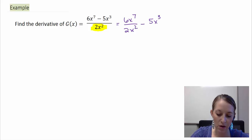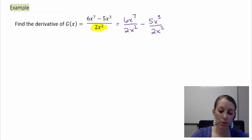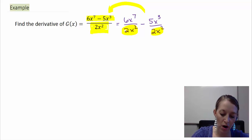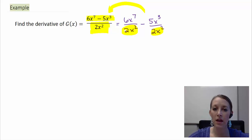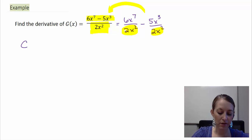So I have 6x to the seventh over 2x squared, minus 5x to the third over 2x squared. We actually do this quite often, but typically in reverse — when adding or subtracting fractions we find a common denominator and combine numerators. So this is a principle you use all the time, just in the opposite order. I still cannot take the derivative because it's not in the format we need. To use our four shortcut rules, we need it in the form of a constant times x to some power, plus or minus a constant times x to some power.